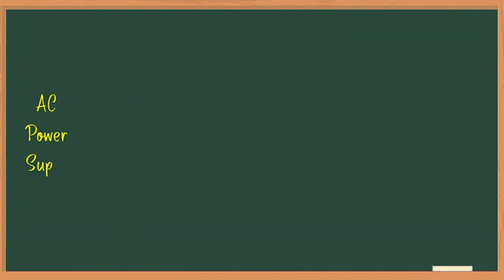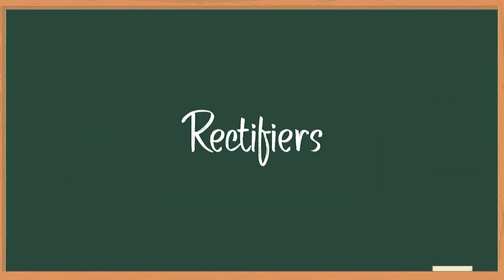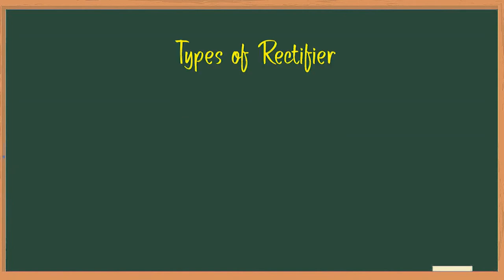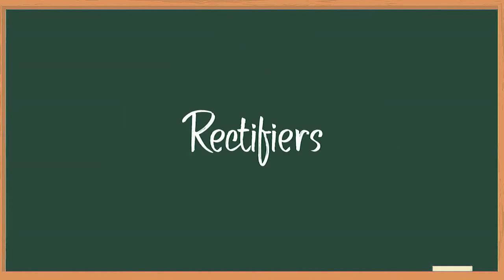The process of rectification is to convert AC power into DC power, and the circuit used for rectification is called a rectifier. This rectifier can be classified into two different types: the first one is the half wave rectifier and the second one is the full wave rectifier. So let us discuss both types of rectifiers in detail.